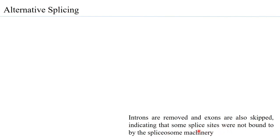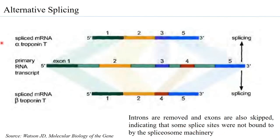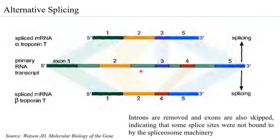Now let us look at an example. The primary RNA transcript of troponin T — a molecule associated with muscles, especially skeletal muscles, with a role in muscle contraction — has been observed to be spliced in two ways, showing alternative splicing. If all introns were removed and exons 1, 2, 3, 4, and 5 came together, that would have been normal splicing.